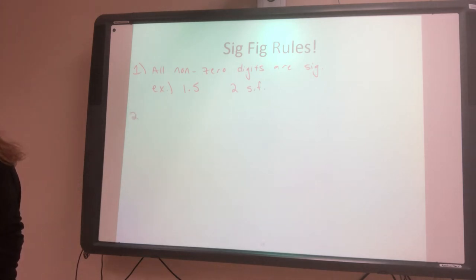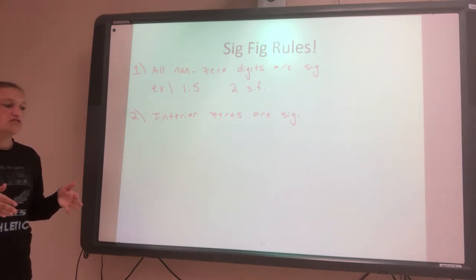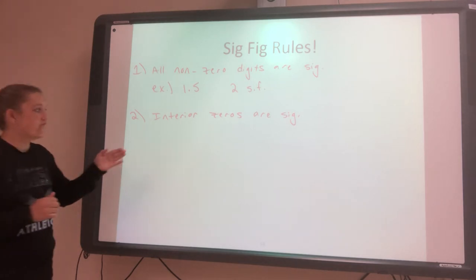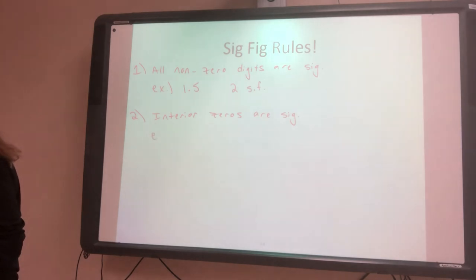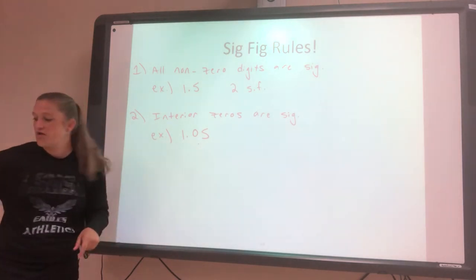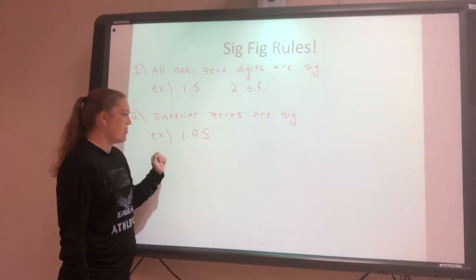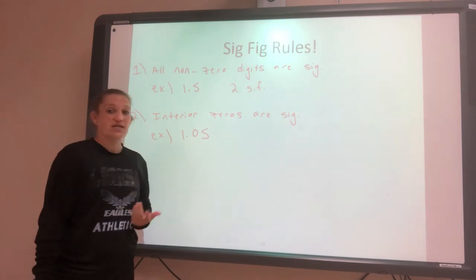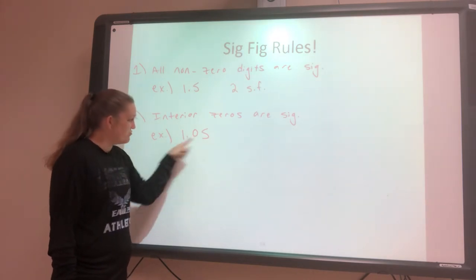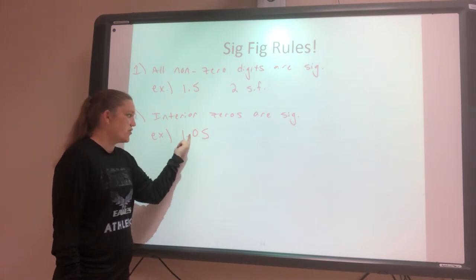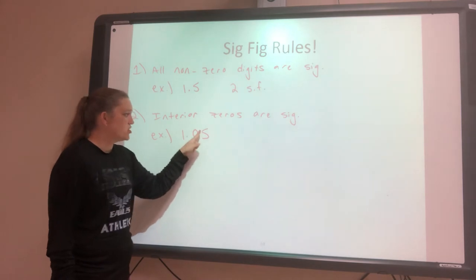Rule number two says interior zeros are significant. You can think about these as sandwiched in, or zeros that are bookended. That means if you look at the zero and go to the left or to the right, at some point you have to hit a non-zero number. For example, 1.05 — it could have been 10.5, doesn't matter where the decimal place is. The 1 and the 5 count because they're not zero, and the zero is sandwiched in. If I go to the left, there's a non-zero number; if I go to the right, there's a non-zero number. So it counts — 1, 2, 3 significant figures.